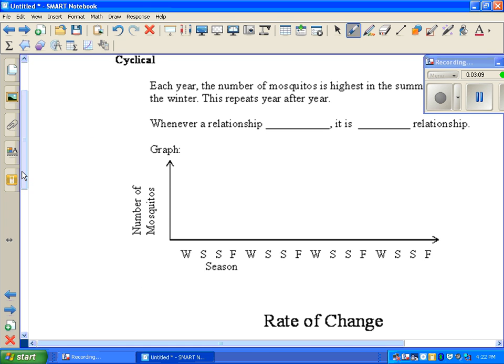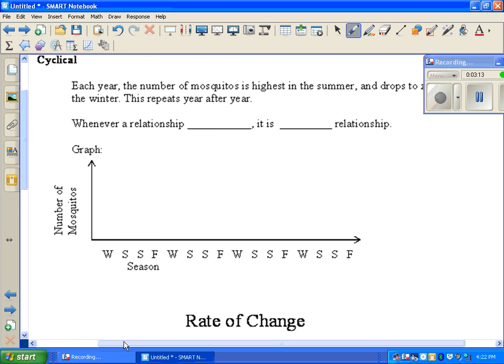And the third type we need to be able to recognize is something that is cyclical. So here's an example of that. Each year, the number of mosquitoes is highest in the summer and drops to zero in the winter. This repeats year after year. So when you have a relationship that repeats like that, it goes in a cycle. It's called a cyclical relationship. So for this one, our number of mosquitoes down here, this means winter, spring, summer, fall.